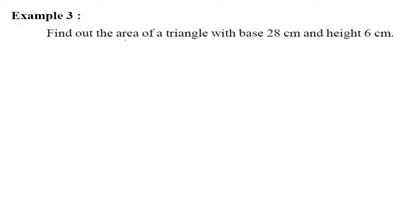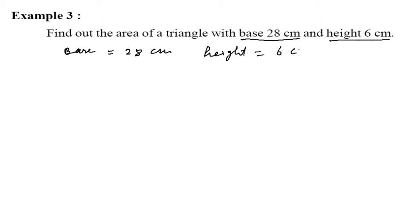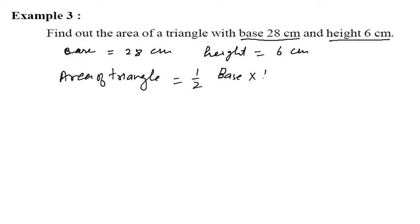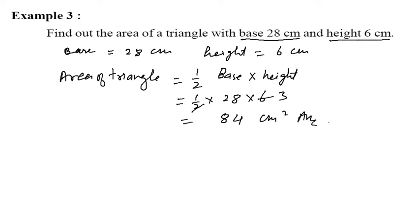Example 3: Find out the area of a triangle with base 28 centimeters. Base is given as 28 centimeters and height is given as 6 centimeters. Area of a triangle — the formula is 1 by 2 into base into height. So, 1 by 2 into 28 into 6 gives 84 centimeters square. That is the unit of the area.